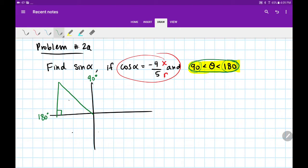So x is -4. I'll write x = -4 along my horizontal leg. And r is 5, so I'll write that where r goes, which is always the hypotenuse.